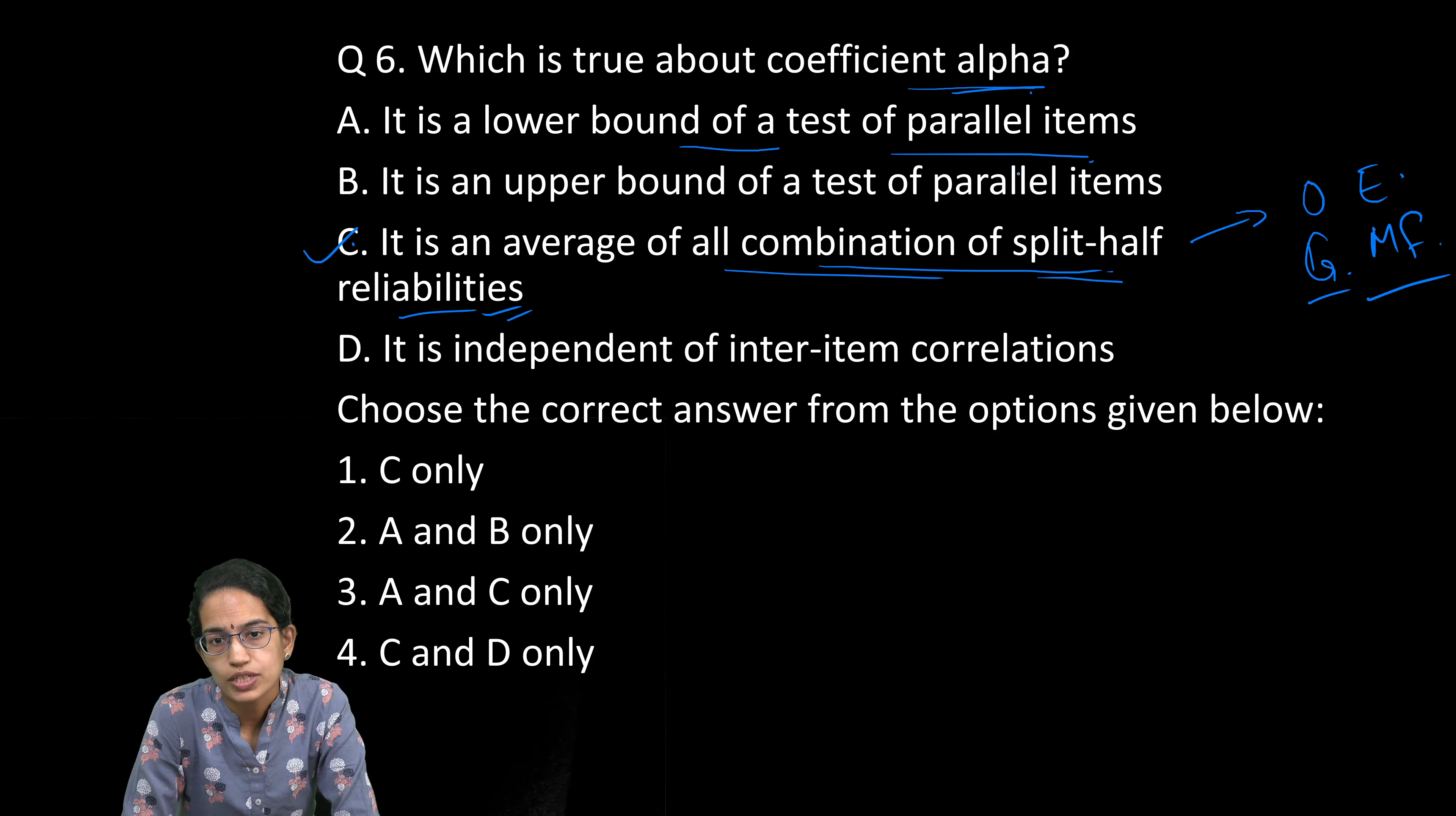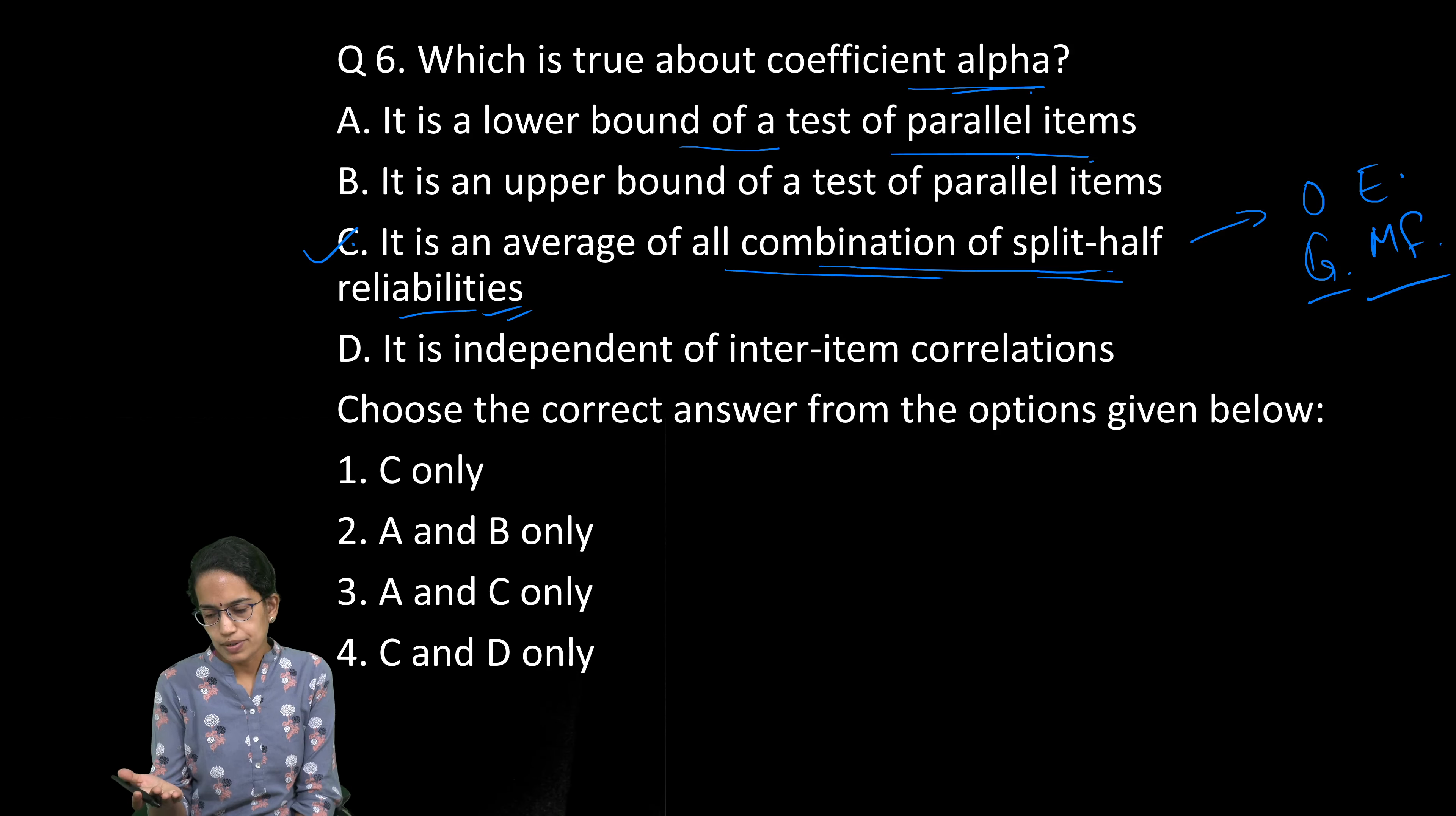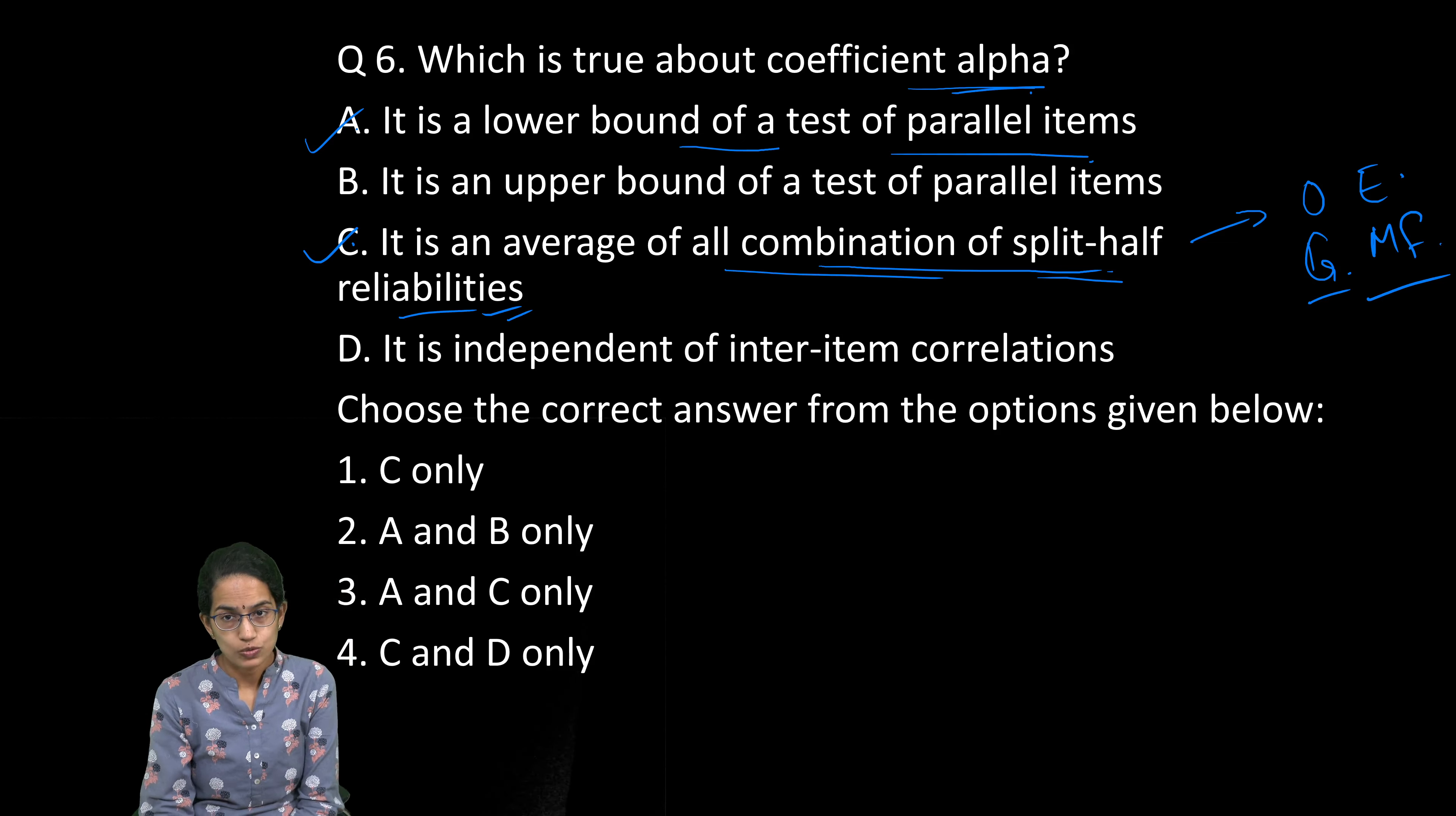It's a lower bound of the test of parallel items. These give a gross underestimate, and alpha cannot have a value that could be reliability-based on the usual assumption. Therefore, it's a lower bound to the reliability criteria. A and C are the correct options. Coefficient alpha was discussed in detail when we talked about reliability, validity, and usability—the three bases for determining test standardization. Very important topic, must cover. Those were some important questions we covered in psychology today.